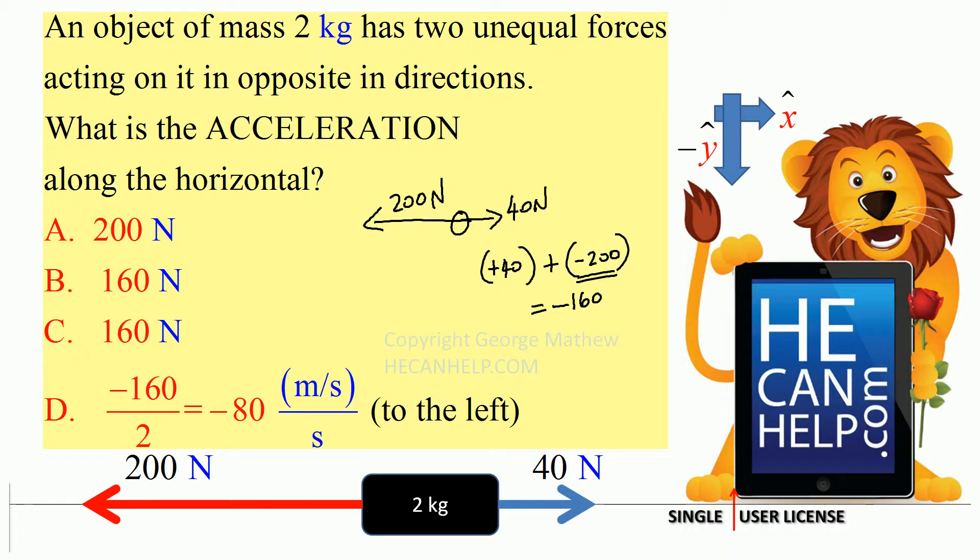And so negative 160 is equal to mass times acceleration. So negative 160 equals 2 times A. So what is A? Negative 160 divided by 2. So negative 80 meters per second per second and that is your acceleration. So your acceleration is to the left.